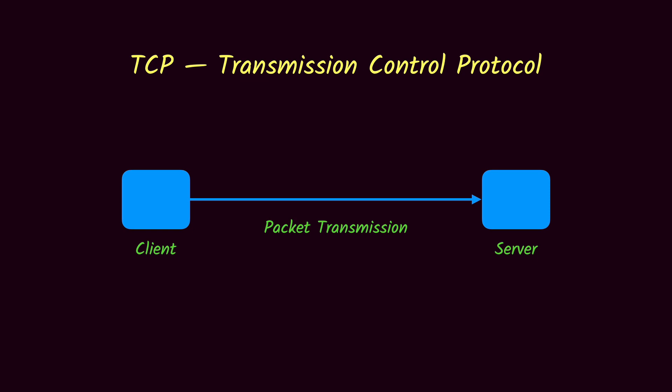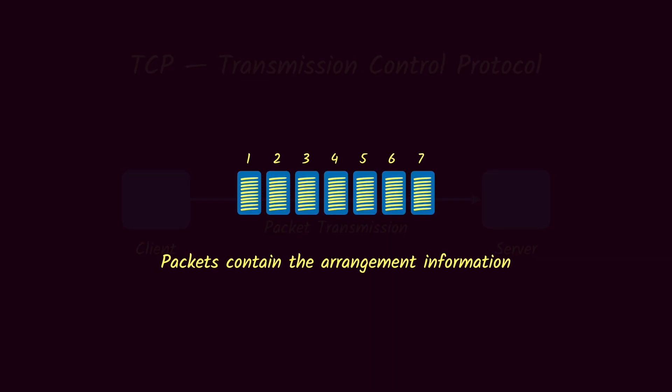TCP packets are different from UDP packets. TCP packets have special information attached to identify the order in which the packets are arranged, which is used to combine them and pass them to the application layer. Because of this additional information, the header size in TCP packets is bigger than UDP packets — the header size per TCP packet is 20 bytes.